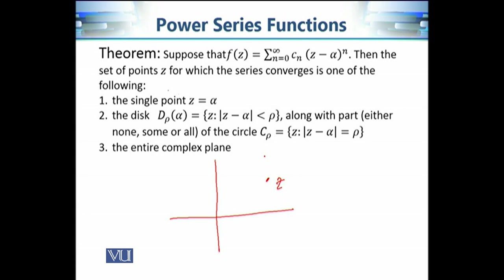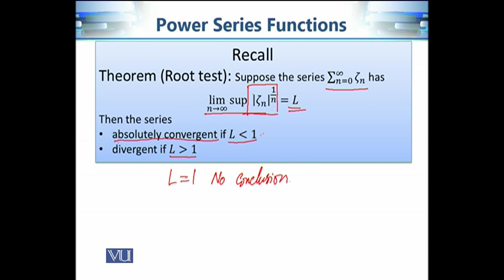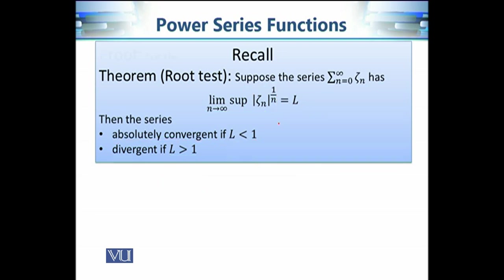Let's prove why these are the only three possibilities. To prove this we are going to use the root test discussed in our earlier modules. The root test says that if we have an infinite series, we calculate the limit superior of the nth root of the modulus of its terms. If this expression equals L, then the series absolutely converges if L is less than 1, it diverges if L is greater than 1, and for L equal to 1 there is no conclusion — the series may diverge or converge.